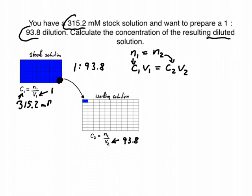And we are looking actually for the concentration of our working solution, so we just simply rearrange this equation: C2 equals C1 times V1 over V2. And I've written that in a slightly expanded form. We know what C1 is, that's our concentration, that's 315.2 millimolar.